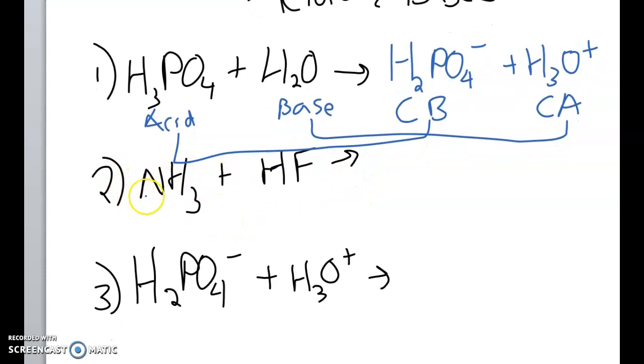For the next one we have NH3 and HF. Figure out who the acid and base are. This has the H in front. This is our hydrofluoric acid, and on your reference table you'll see NH3 is listed as a base, it's ammonia. So what products do you think they will form?